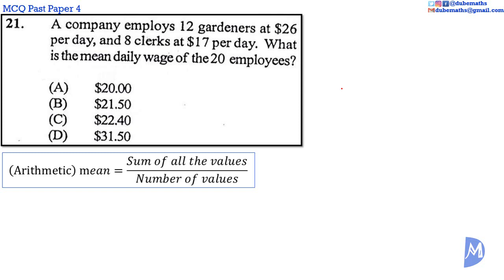26 by 12. 6 by 1 is 6. 2 by 1 is 2. 6 by 2 is 12. 2 by 2 is 4 added to 1, 5. 2. 6 plus 5 is 11. 2 plus 1 is equal to 3.